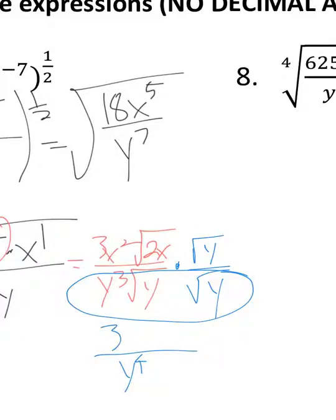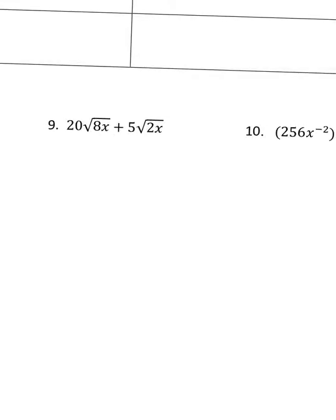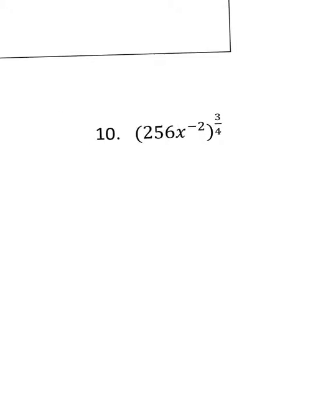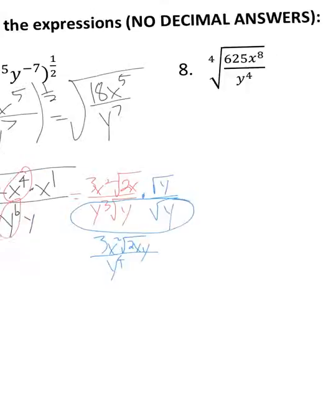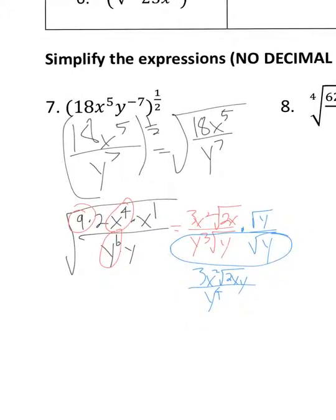On top, you have 3x^2 times the square root of 2xy. For problems 8 and 9, you don't have to worry about rationalizing, but for number 10, you will have to rationalize the denominator. It will be pretty similar to this, but this should start you off and give you some help for this assignment. Thanks, bye.